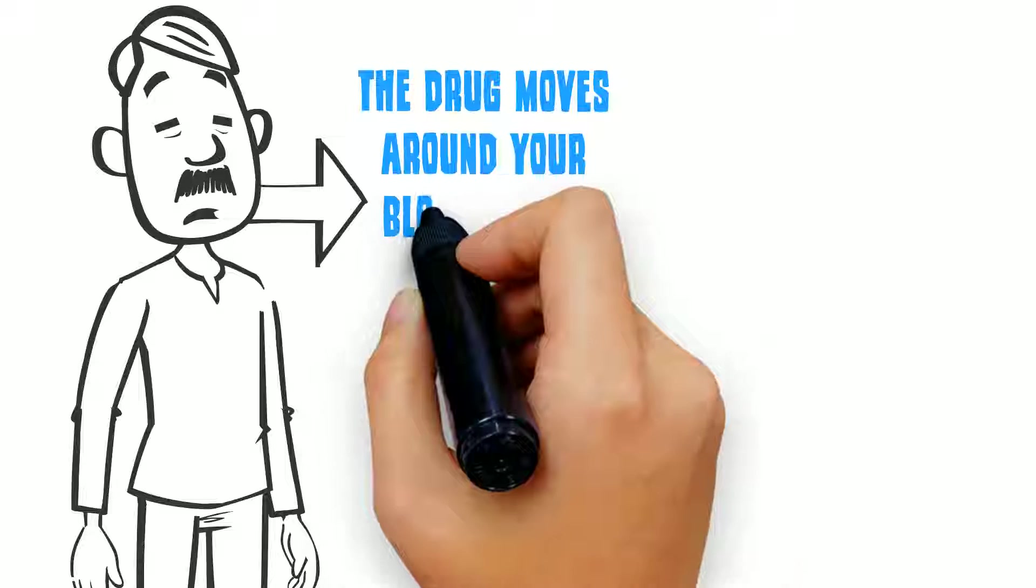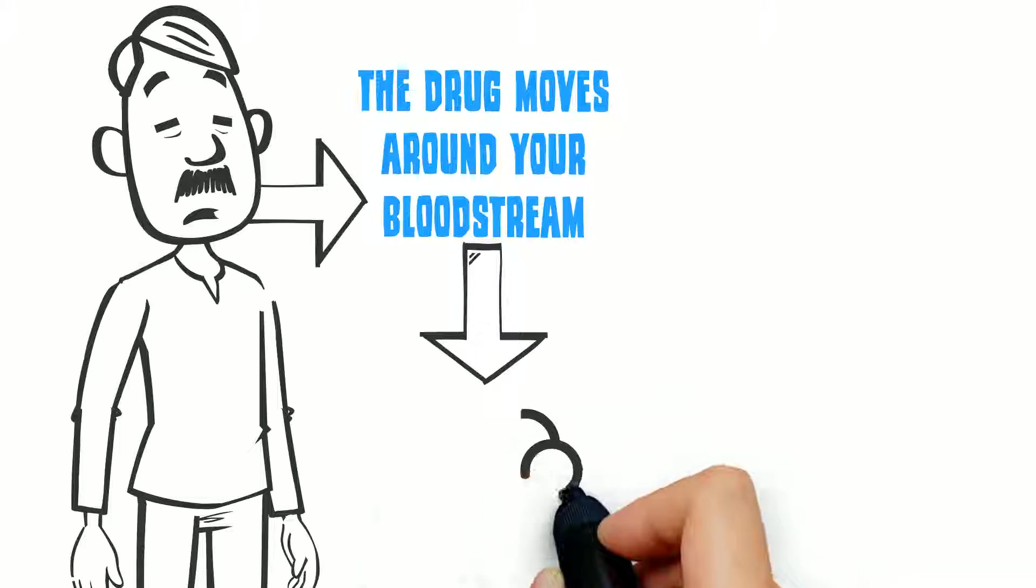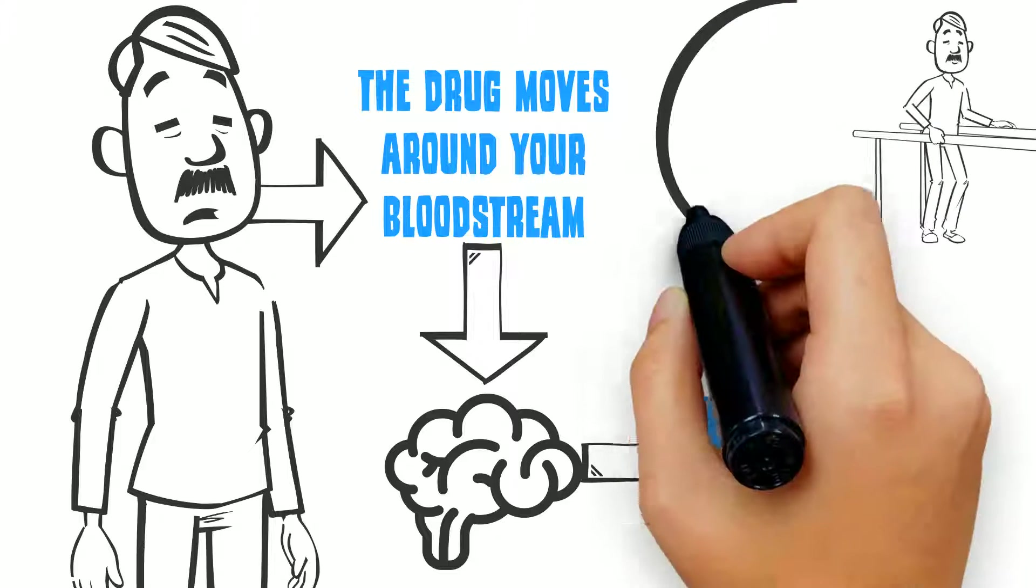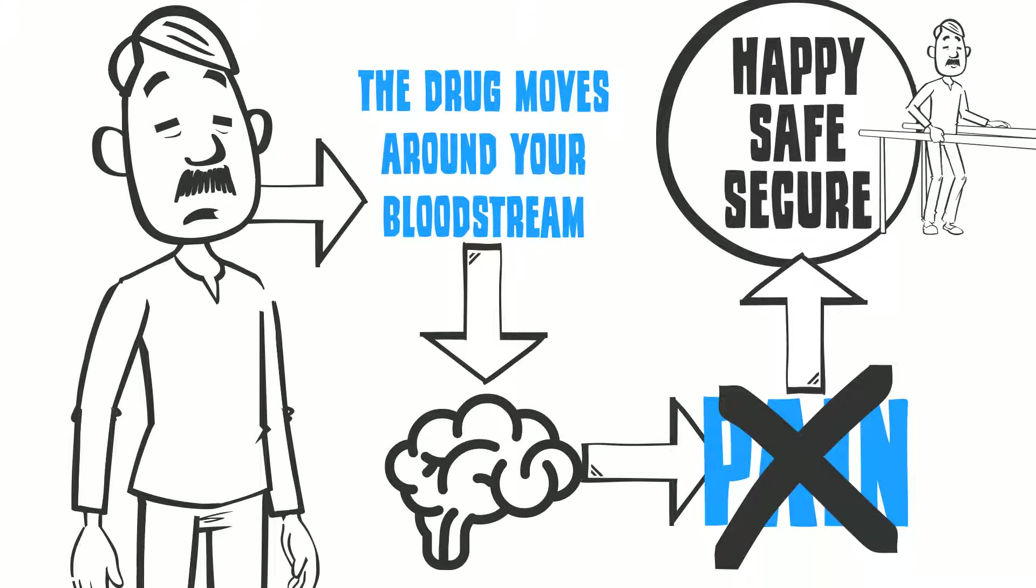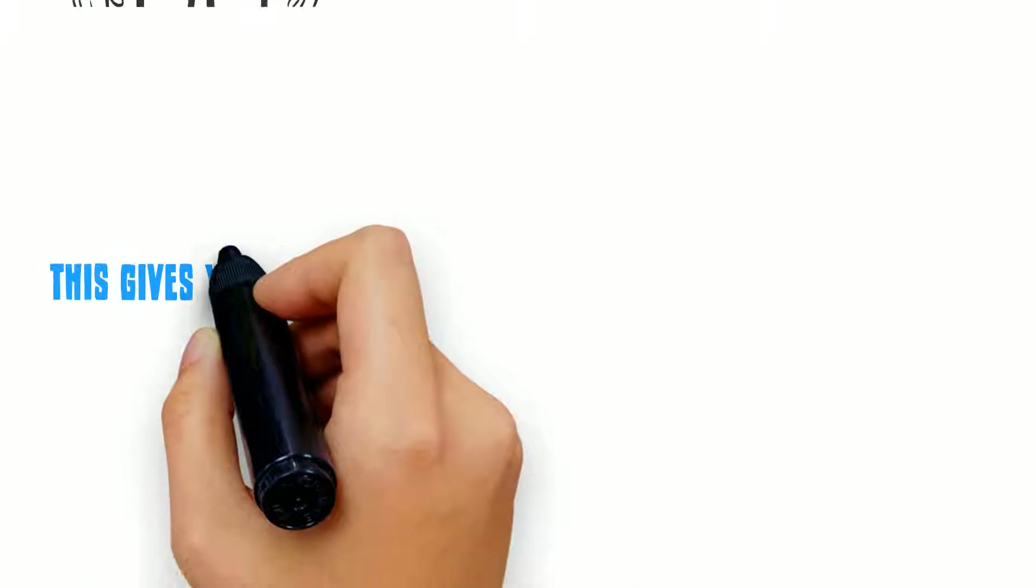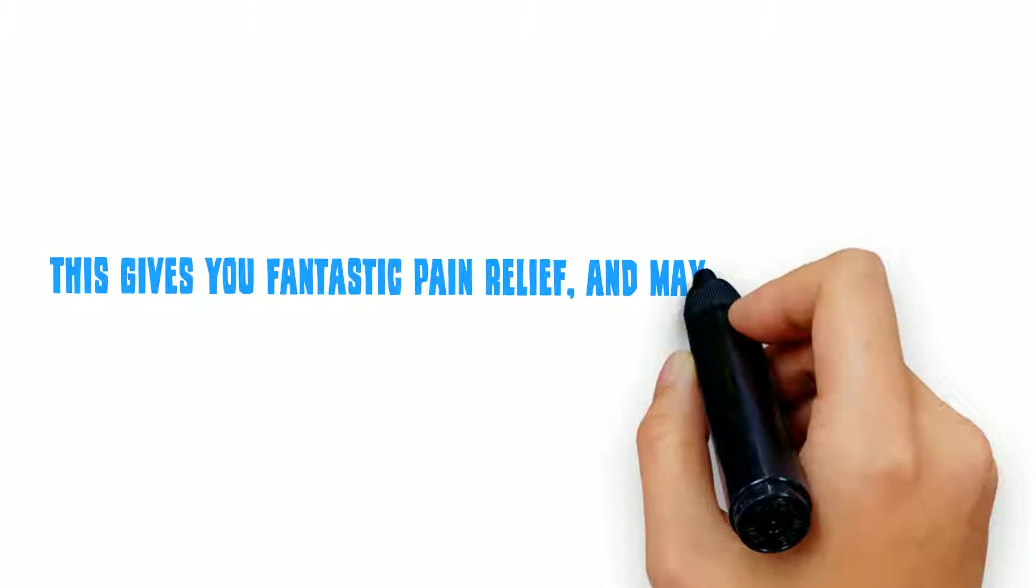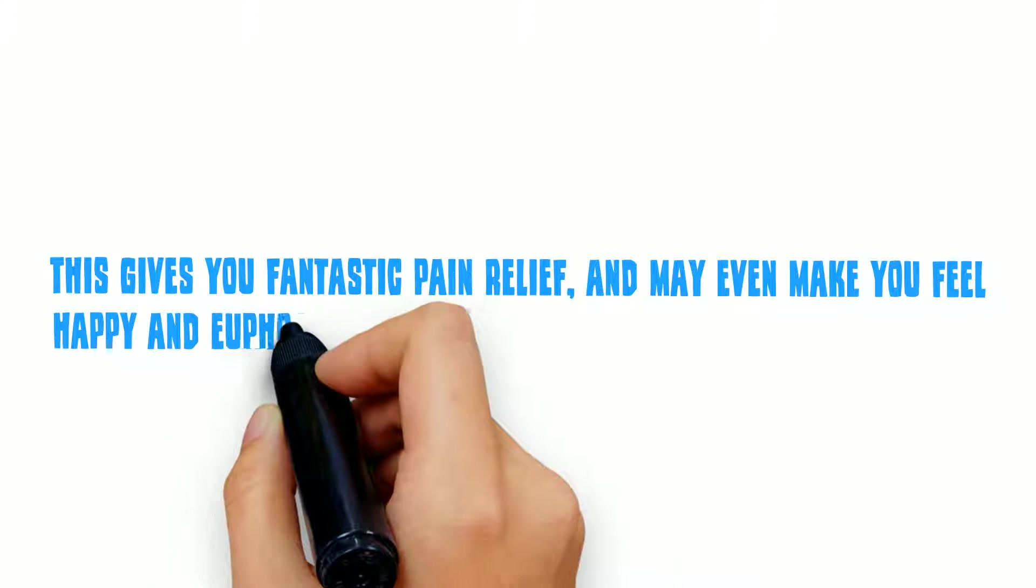When you take a pain pill, the drug moves around your bloodstream, makes its way to the brain, and blocks the feeling of pain. It also produces a state of feeling happy, safe, and secure by causing the release of positive messengers. This gives you fantastic pain relief, and may even make you feel happy and euphoric.